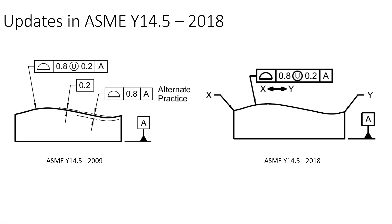Another remarkable change is in using unequally disposed profile tolerances. The use of a phantom line in orthographic views to specify unequally disposed profile tolerance zone boundaries, which was optional in ASME Y14.5 2009, has been removed in the 2018 version. Now we will only be able to use the unequally disposed profile modifier symbol in the feature control frame, and we will not be able to use the phantom line in profile controls.